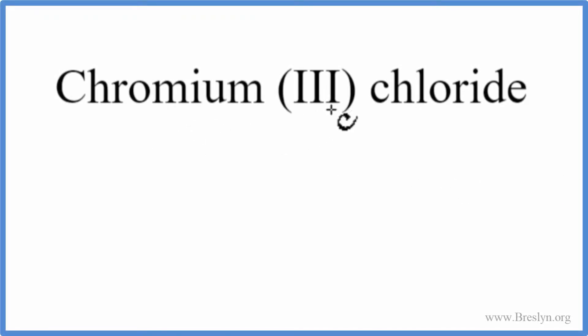To write the formula for chromium three chloride, we go to the periodic table. We look up chromium and see the element symbol Cr, and then for chloride, we're looking for chlorine, that's Cl.